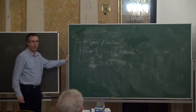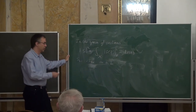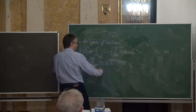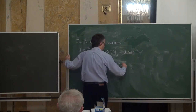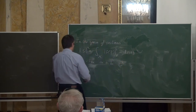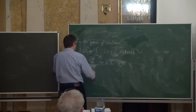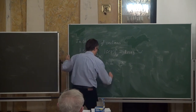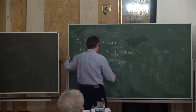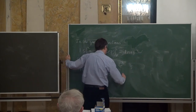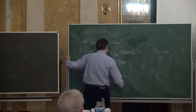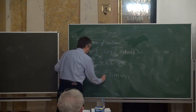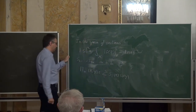We construct the reproducing kernel in the space of sections in L^k. The reproducing kernel is given by a sum of the basis elements S_i(x) tensored with S_i(y).